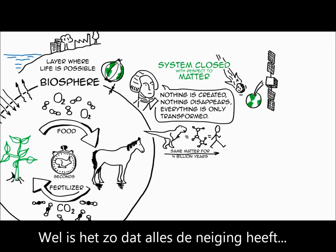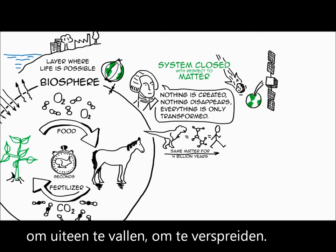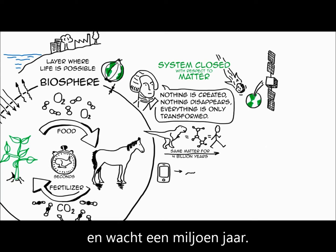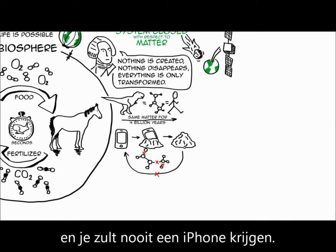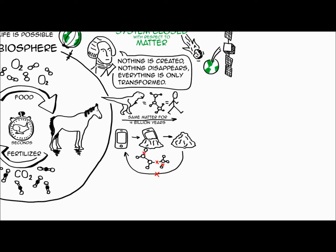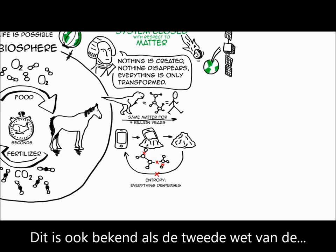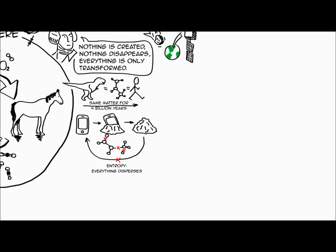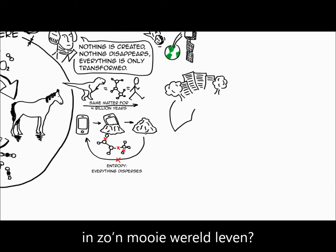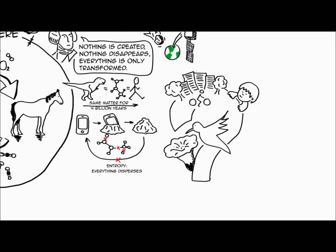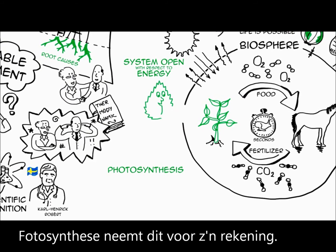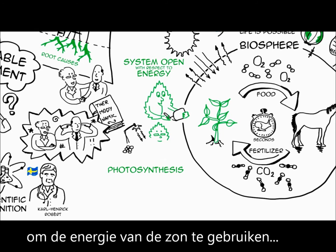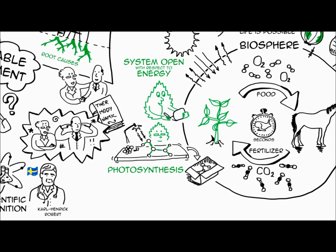The other thing that comes with this is that everything has a tendency to disperse. Take an iPhone and wait for a million years — it's very likely that you will get a pile of dust. Take a pile of dust and wait for a million years, you will never get an iPhone. It works only in one direction. This is also known as the second law of thermodynamics, the law of entropy. So if everything disperses all the time, how is it possible that we live in such a beautiful world with nature, cities, and flowers? Well, this is what photosynthesis does for us. Photosynthesis pays the bills — it enables plants to use the energy from the sun in order to reorganize matter and create new structure.